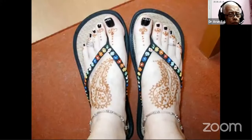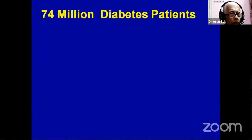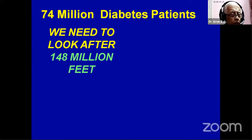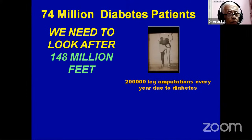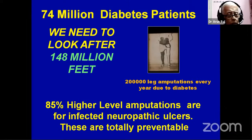Beautiful feet, when diabetes strikes, this is what happens. We need to know why that happens — only then can you prevent the tragedy. As of today, we have 74 million diabetic patients, 148 million feet to look after, and 200,000 higher-level amputations. 85% of them are because of infected neuropathic ulcers and they are totally preventable.